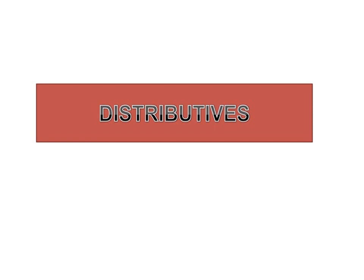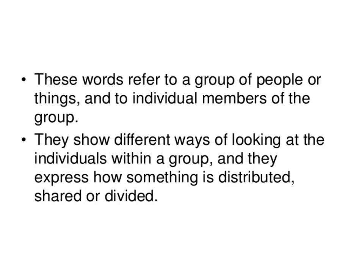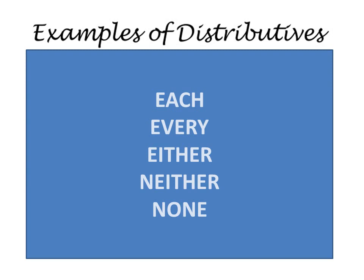The last type of numeral determiners is distributive determiners. These words refer to a group of people or things — either the group as a whole or the individual members. They show different ways of looking at individuals within a group and express how something is distributed, shared, or divided — taken as a whole, as individuals, or in series. The distributive numeral adjectives are: each, every, either, neither, and none.